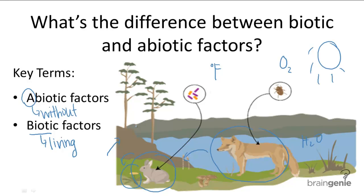These two factors work together to balance the ecosystem. When we talk about abiotic factors, we have to talk about ecosystems or higher levels of organization, because levels of organization below ecosystems only deal with the biotic factors. The abiotic environment supports organisms, and organisms contribute to and modify the abiotic environment.